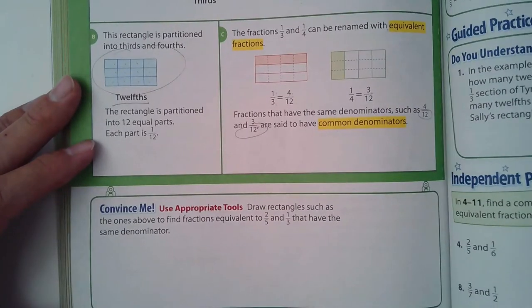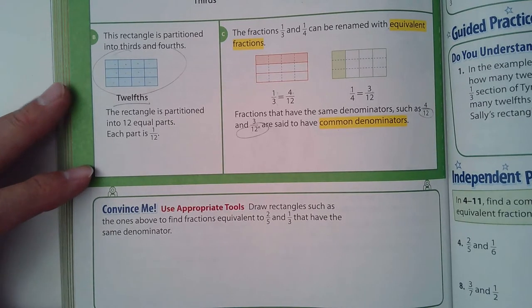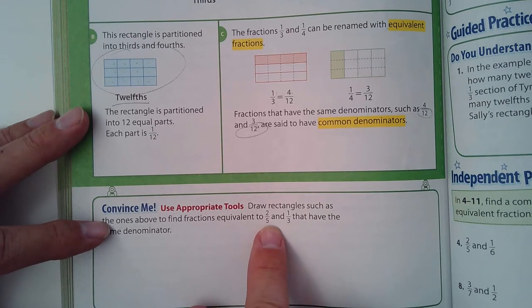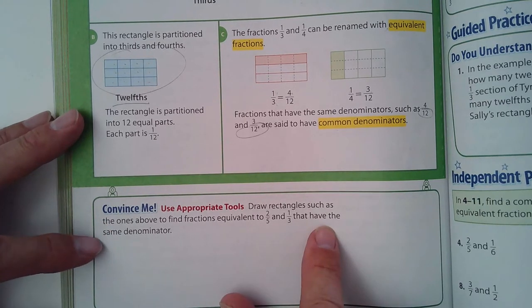So let's take a look here at the Convince Me. It says draw rectangles such as the ones above to find equivalent fractions two-fifths and one-third that have the same denominator.